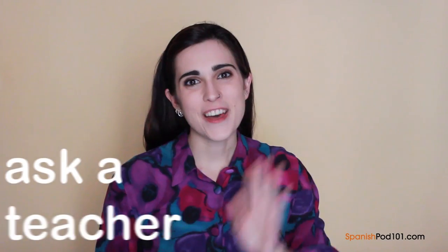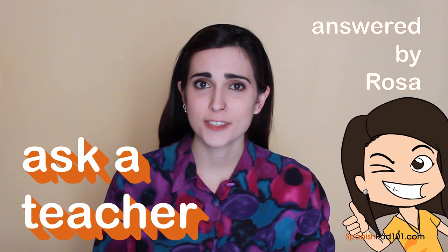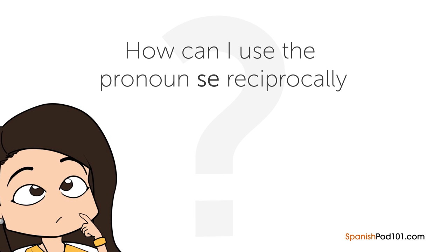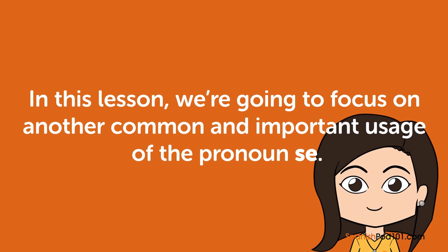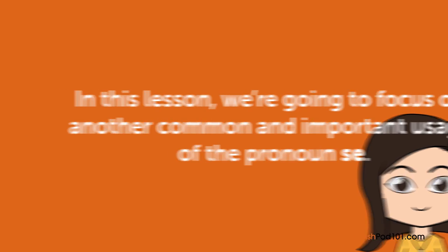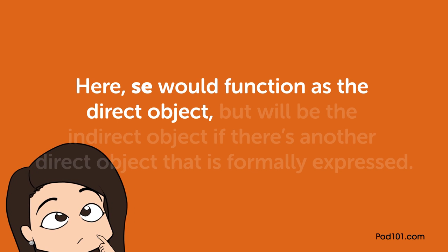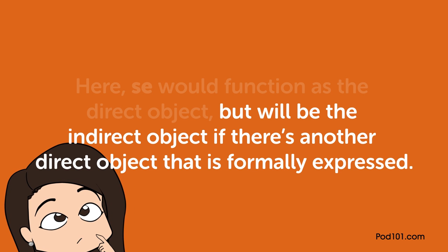Hi everybody, Rosa here. Welcome to Ask a Teacher, where I'll answer some of your most common Spanish questions. The question for this lesson is: how can I use the pronoun SE reciprocally? We'll focus on another common and important usage of SE. We can see the reciprocal pronoun SE when we have two or more subjects doing the same action to each other. Here SE functions as the direct object, but will be the indirect object if there's another direct object formally expressed.